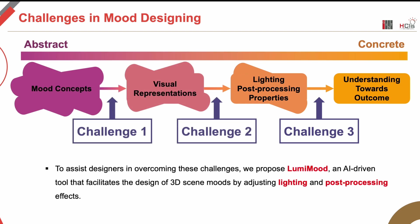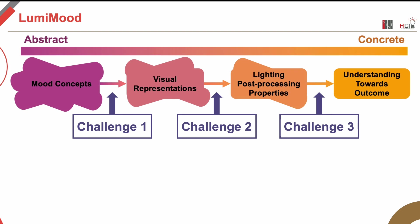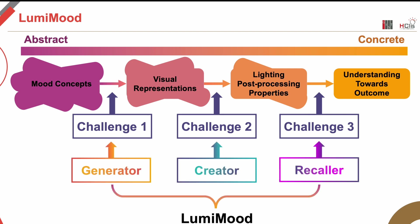To overcome these challenges, we propose LumiMood, an AI-driven CST that supports the designing process of lighting and post-processing effects. We implemented a user interface as an add-on to the Unity engine, through which users can interact with our system without needing to know how the backend works. LumiMood is designed to handle the three challenges found in our formative study, and is composed of three components: generator, creator, and recaller, each aiming to solve one challenge.